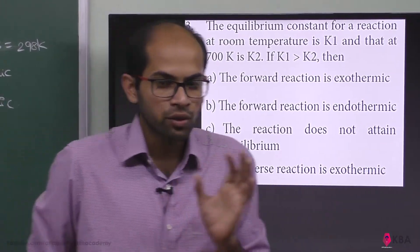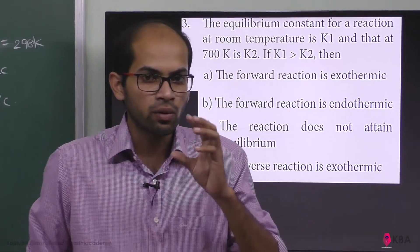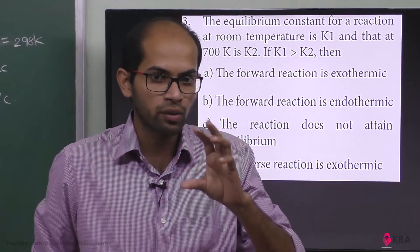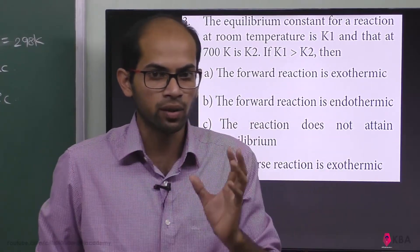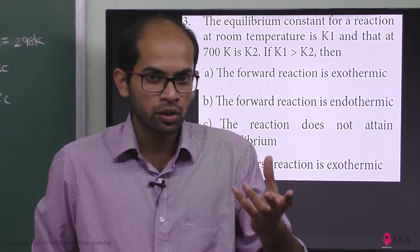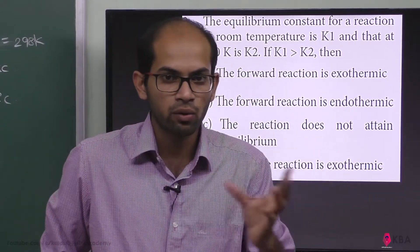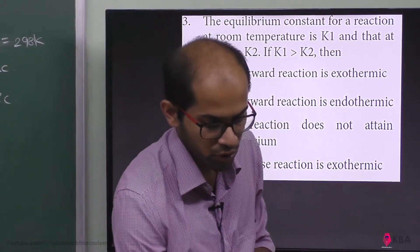We use the Van't Hoff equation. At temperature T1, the equilibrium constant is K1, and at temperature T2, the equilibrium constant is K2. This is the Van't Hoff equation relating the two temperatures and equilibrium constants.